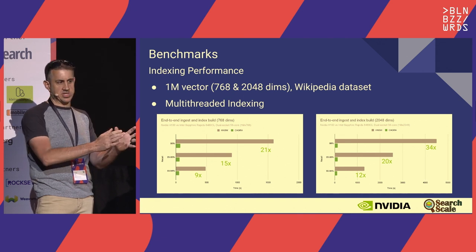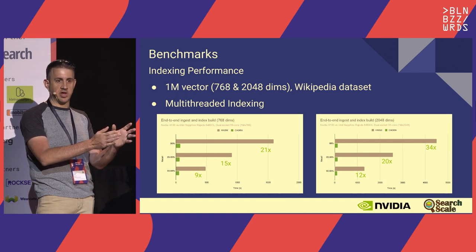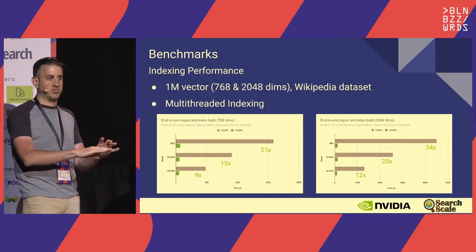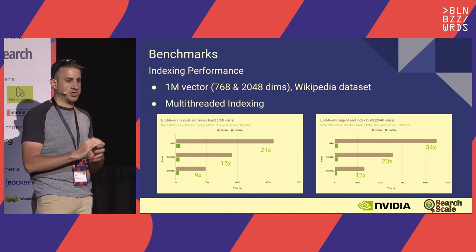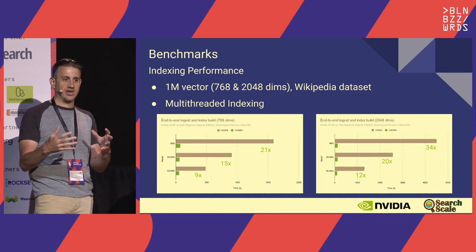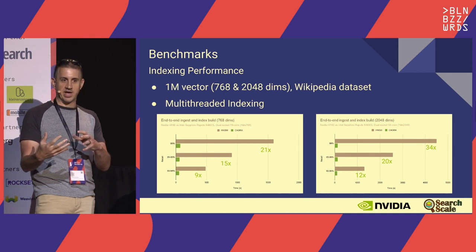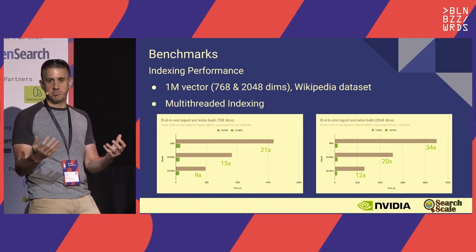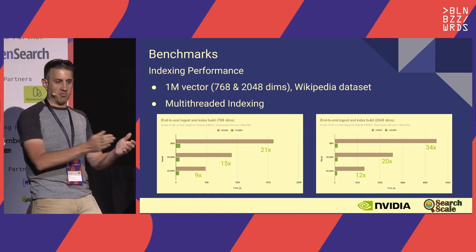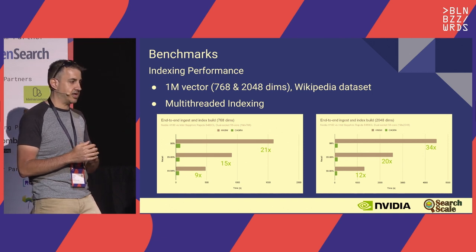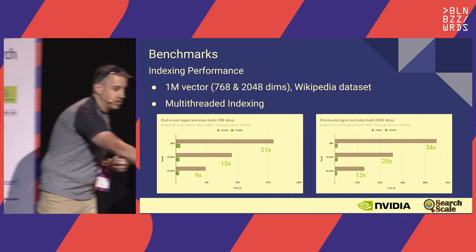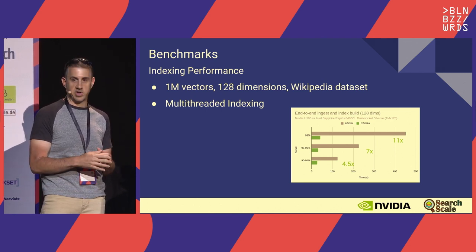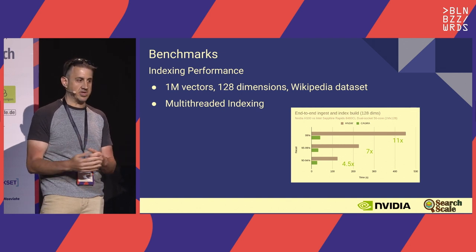This isn't exclusive to the H100—we also benchmarked on the RTX A6000 workstation-class GPU and the consumer-grade RTX 4090, and we see the same behavior and the same performance gap. We compare against performance-comparable CPUs—a dual-socket SPR Intel CPU on a DGX, which is a fair comparison against an H100. The gap continues to grow with dimensionality, number of embeddings, and recall level. Even at 128 dimensions we're still showing great performance, with a smaller gap than at 2,000 dimensions.